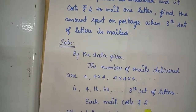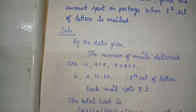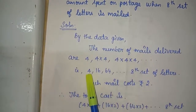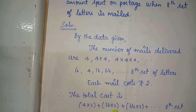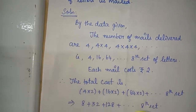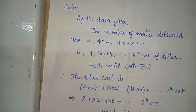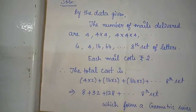Each mail costs Rs. 2. Therefore, the total cost is: 4 letters × 2 rupees, then 16 letters × 2 rupees, then 64 letters × 2 rupees, and so on up to the 8th set. This gives values 8, 32, 128, etc., which form a geometric series.